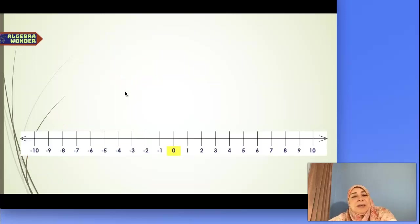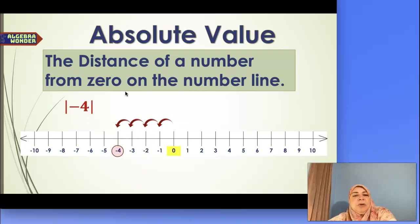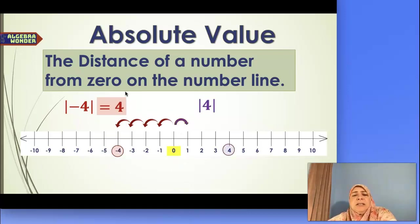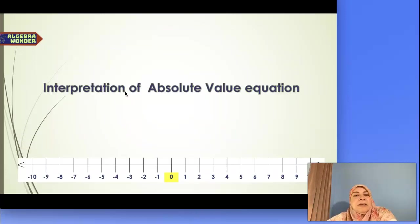So let's talk about absolute value before we continue. We know the absolute value of any number is the distance from 0 to that number. So the absolute value of negative 4 is the distance from 0 to negative 4, which is 4. Same thing — absolute value of 4 is the distance from 0 to 4, which is also 4. So remember, absolute value represents distance.